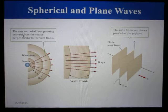The distance between adjacent wave fronts equals the wavelength. The radial lines pointing outward from the source and perpendicular to the arcs are called rays.